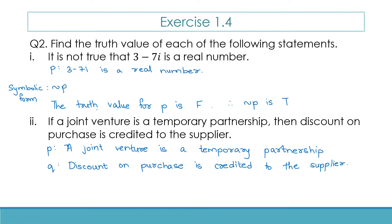The statement is of the type P implies Q. We need to find the truth value of P and Q. Joint venture is a temporary partnership — this is true. A joint venture is when two or more parties come together for a specific project temporarily, so it is a temporary partnership. P's truth value is true.